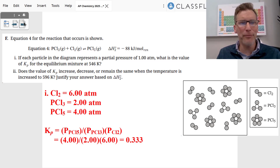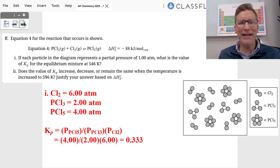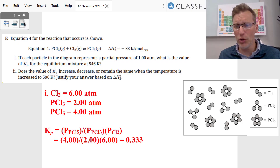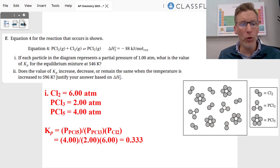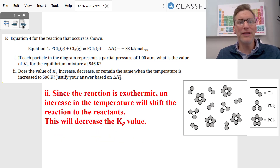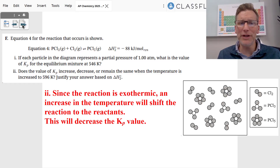Part F gives an equilibrium where each particle represents one atmosphere. Counting: six Cl2 gas = 6 atm, two PCl3 = 2 atm, four PCl5 = 4 atm. Plugging into the equilibrium expression — 4 divided by 2 divided by 6 — gives Kp = 0.333.